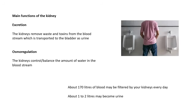The main functions of the kidney. First of all, excretion, which means getting rid of stuff. The kidneys remove waste and toxins — stuff your body doesn't need and poisonous stuff. In particular, a substance called urea, and it removes it from the blood. It's then transported to the bladder as urine.